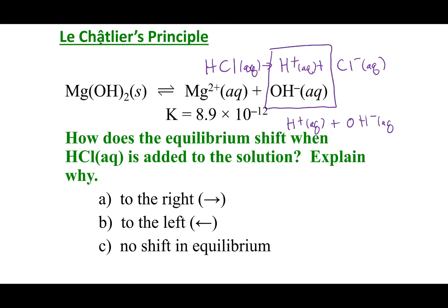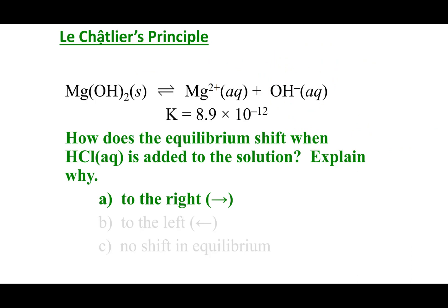Hopefully you'll see that when I have H+ aqueous, it can combine with OH− aqueous to make H2O liquid. When it does this reaction, I am removing these two ions — they become liquid. This is my net ionic equation. So in essence, when I add HCl to the solution, I am removing my OH−. If I'm removing OH−, the system wants to remake what it lost, so it has to make more product. It's going to shift to the right.